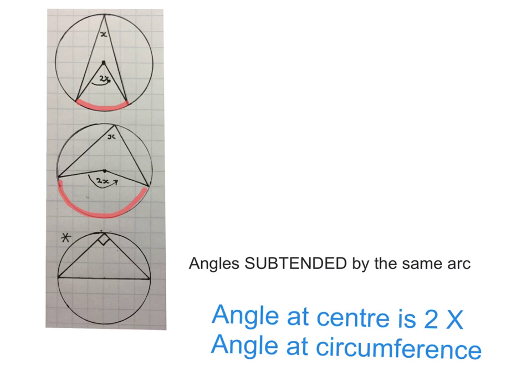Now what is happening is because this arc is getting bigger, this angle is getting bigger, but this angle is still twice as big as that angle over there. This angle is subtended by this arc, this angle is subtended by this arc.